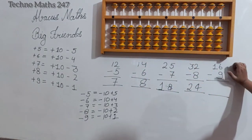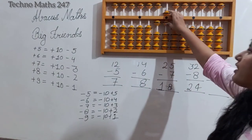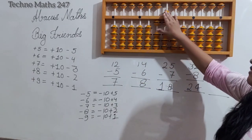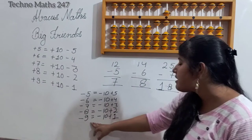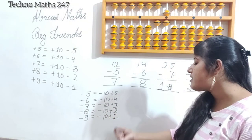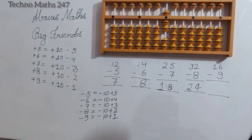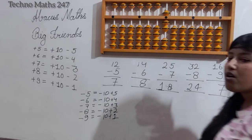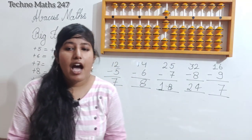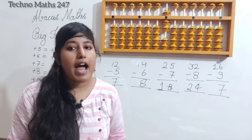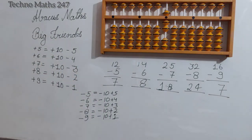Next question: 16 minus 9. We place 1 on the 10's rod and 16 on the abacus — that is 10 plus 5 plus 1. For minus 9, the big friend is minus 10 plus 1. We apply minus 10 plus 1, and the answer is 7. These were simple addition and subtraction examples with the help of big friends. In our next video, we will learn about the combination of addition and subtraction using both big friends and small friends.